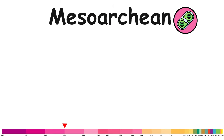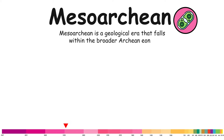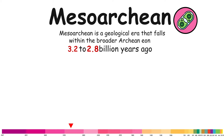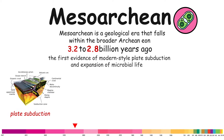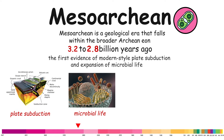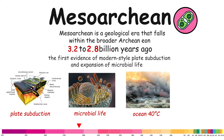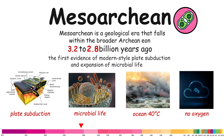Mesoarchian. The Mesoarchian is a geological era that falls within the broader Archean eon, occurring approximately 3.2 to 2.8 billion years ago. It contains the first evidence of modern-style plate subduction and expansion of microbial life, with an oceanic temperature over 40 degrees Celsius. Also, there was no oxygen in the atmosphere yet.